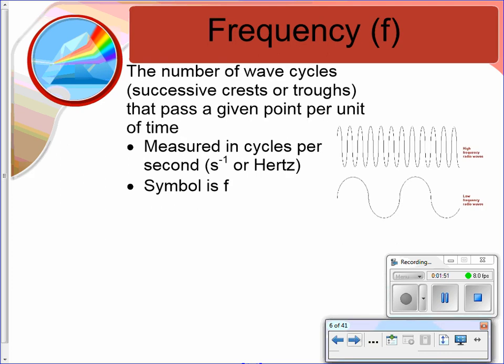Frequency is the number of wave cycles, those successive crests or troughs on our wave, that are going to pass a given point per unit of time. For example, if I put a point above both of these waves over here, you'll notice the top wave is going to have a very high frequency. These crests and troughs are going to pass that point very frequently. They're going to pass more often.